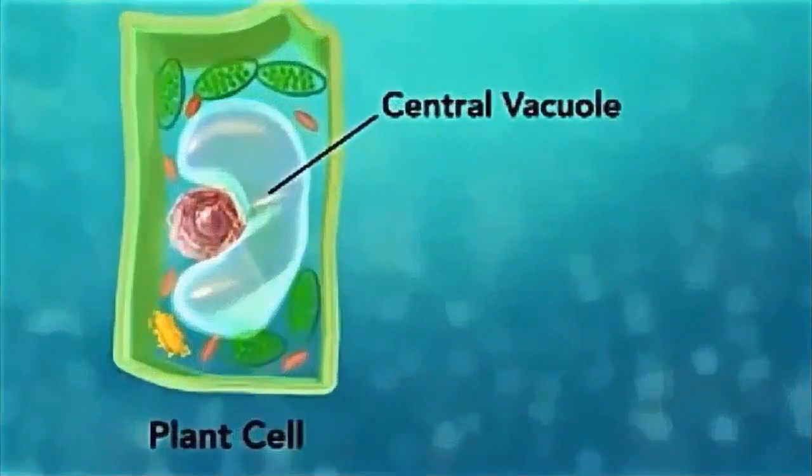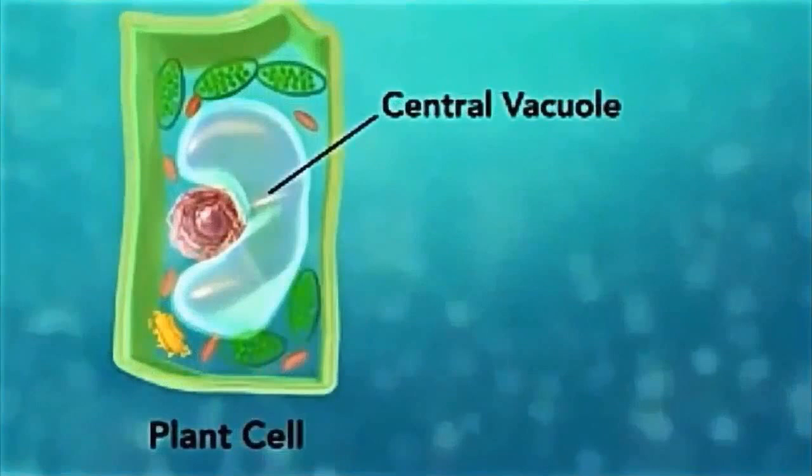For our last organelle, we have the central vacuole. It occupies around 30% of the cell's volume in a mature plant cell. The vital function of central vacuole, apart from storage, is to sustain turgor pressure against the cell wall.